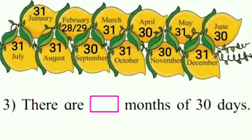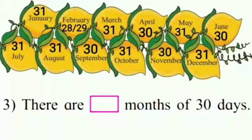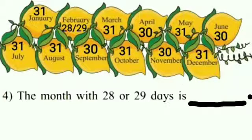Our third sentence: there are dash months of 30 days. So children, let us count the months which have 30 days. We have April, June, September, and November. So we have four months. We will write four in the box.